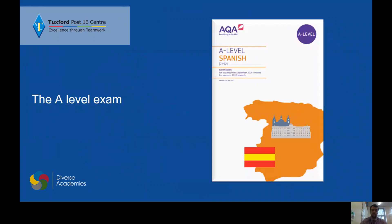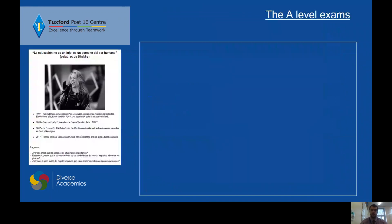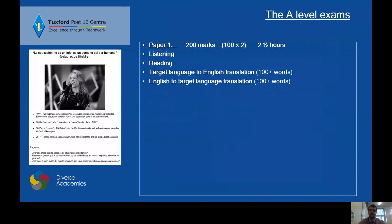Now for the exam — you're used to having a listening paper, a reading paper and a writing paper all separately. But in A-level, paper one is your listening, reading and translation paper, which is a two and a half hour exam. For the listening, you are given the track yourself on a format that you can rewind, pause and go through the track as much as you want, obviously not going out of the time. Your reading and translation are all in the same paper.